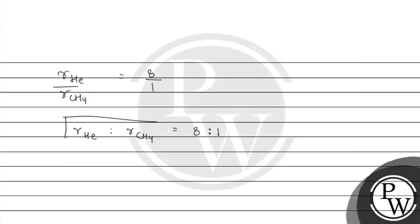So the ratio of rate of diffusion of helium to the rate of diffusion of CH4 is equal to 8:1. This is the required answer. Hope you understood the question. Best of luck.